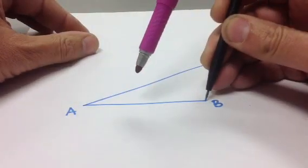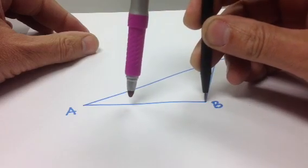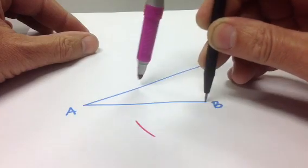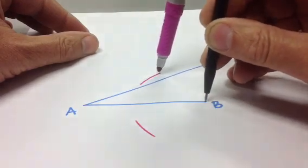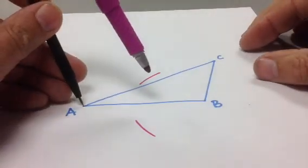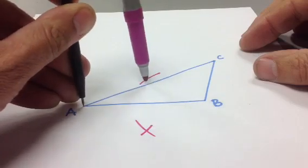To do that, we're going to open the compass up more than half the length of segment AB and strike an arc below AB and above AB from each end of the segment. So from B and then from A.